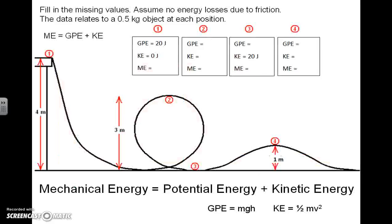I'm going to take you through a couple of these word problems that I have set up for you that have diagrams. This problem says fill in the missing values, assume no energy losses due to friction. The data relates to a 0.5 kilogram object at each position. Hopefully you can see here this is like a roller coaster track and it's got positions one, two, three and four. These boxes up here correspond to those positions.